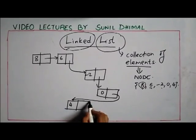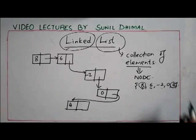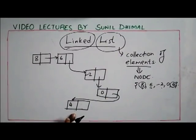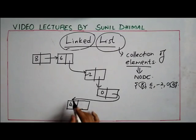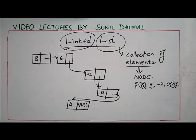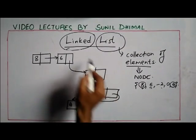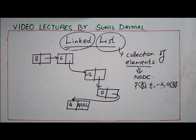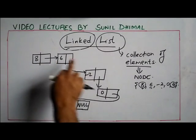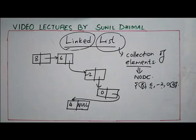If you observe closely, 4 is the last element in this list, so this is the last node. We have first, second, third, fourth, and the last node. The last node is not pointing to anything, so it has a value called null, indicating that this is the last node and it does not have any link — it is not pointing to anything else.